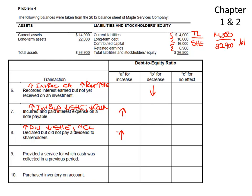We provide a service for which cash was collected in a previous period — in other words, it was an unearned liability or current liability. Revenue is going to increase, which in turn increases shareholders' equity. But our unearned current liabilities are going to go down, making the numerator smaller. So the debt-to-equity will decrease because the numerator is getting smaller and the denominator is getting larger.